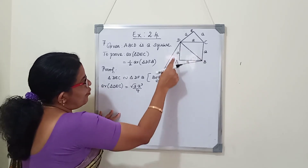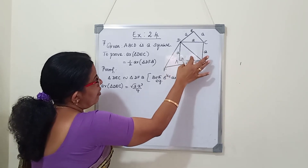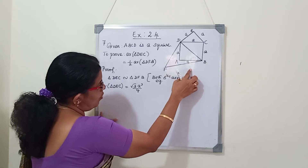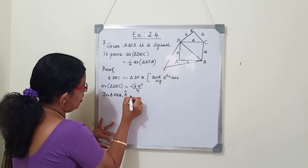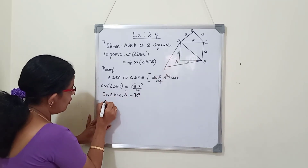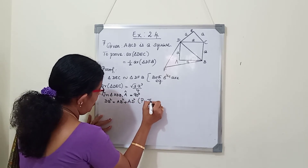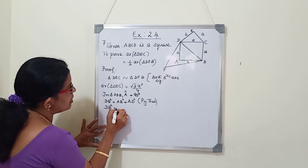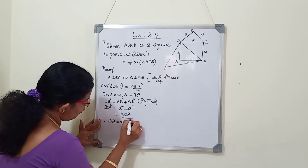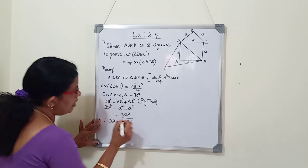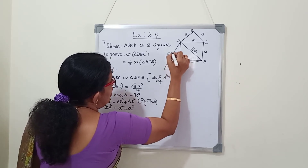To find the side of equilateral triangle DFB, we find DB, the diagonal of the square. In triangle ADB, angle A equals 90 degrees since it is a square. Applying Pythagoras theorem: DB square equals AB square plus AD square equals A square plus A square equals 2A square. Therefore DB equals square root of 2A square equals root 2 times A. So all three sides of triangle DFB are root 2A.